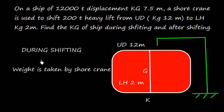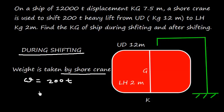Let's work out for during shifting part. While shifting, the weight is taken by shore crane, so it is as good as that we have discharged this 200 ton weight. So we know the formula that GG1 is W into D divided by W.